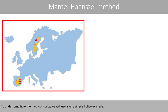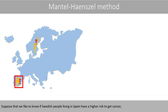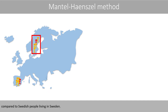To understand how the method works, we will use a very simple fictive example. Suppose that we want to know if Swedish people living in Spain have a higher risk to get cancer compared to Swedish people living in Sweden.